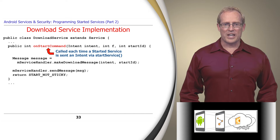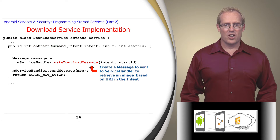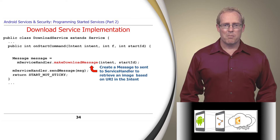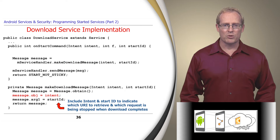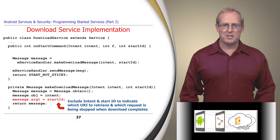The onStartCommand hook method is called each time a started service is sent an intent via the StartService method. In the DownloadService implementation, onStartCommand invokes the MakeDownloadMessageFactory method, which creates a message that will be sent to the service handler to retrieve an image based on the contents of the intent encapsulated in the message. This factory method adds the intent to the message to indicate which URL to retrieve. It also adds the StartID to the message, which is passed by the Android Service Framework to onStartCommand and is used to indicate which request is being stopped when the download completes.